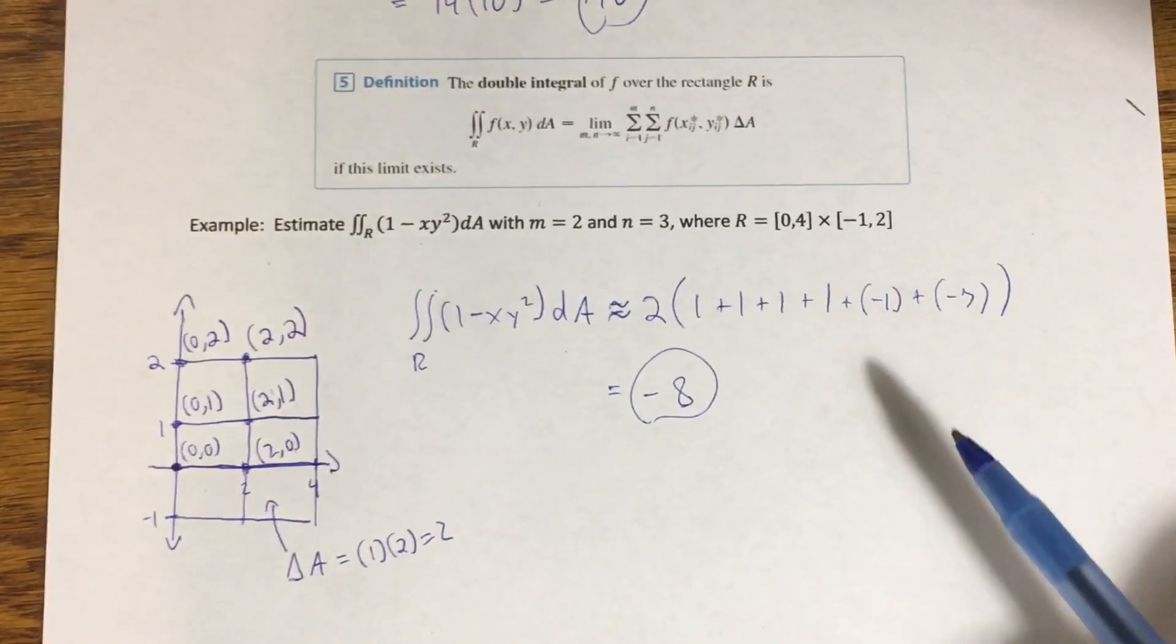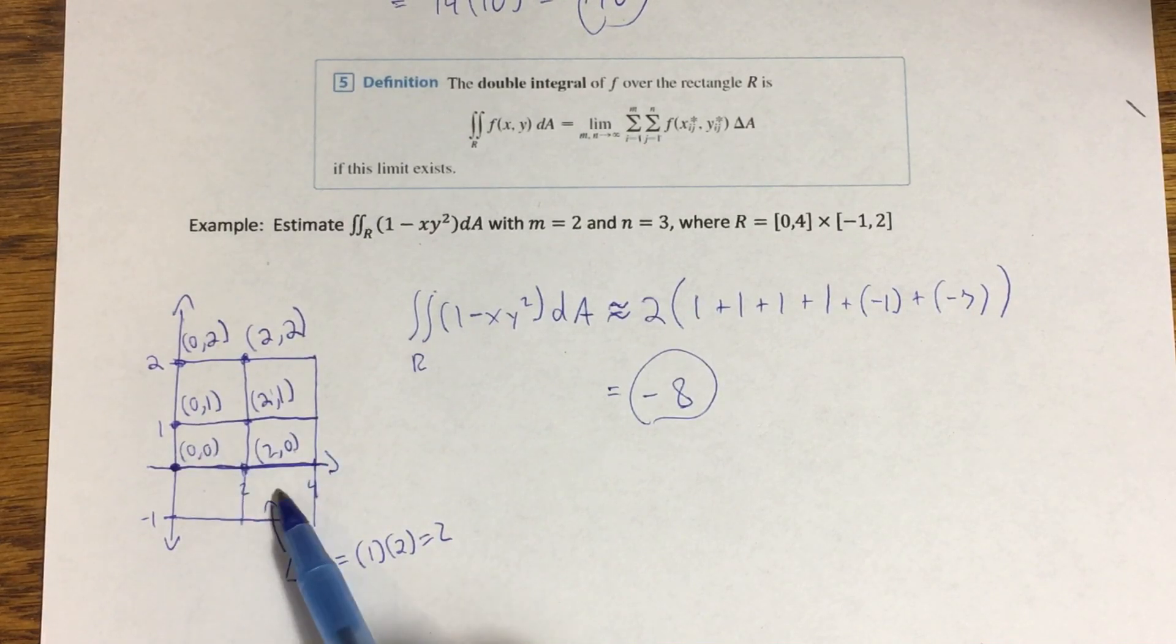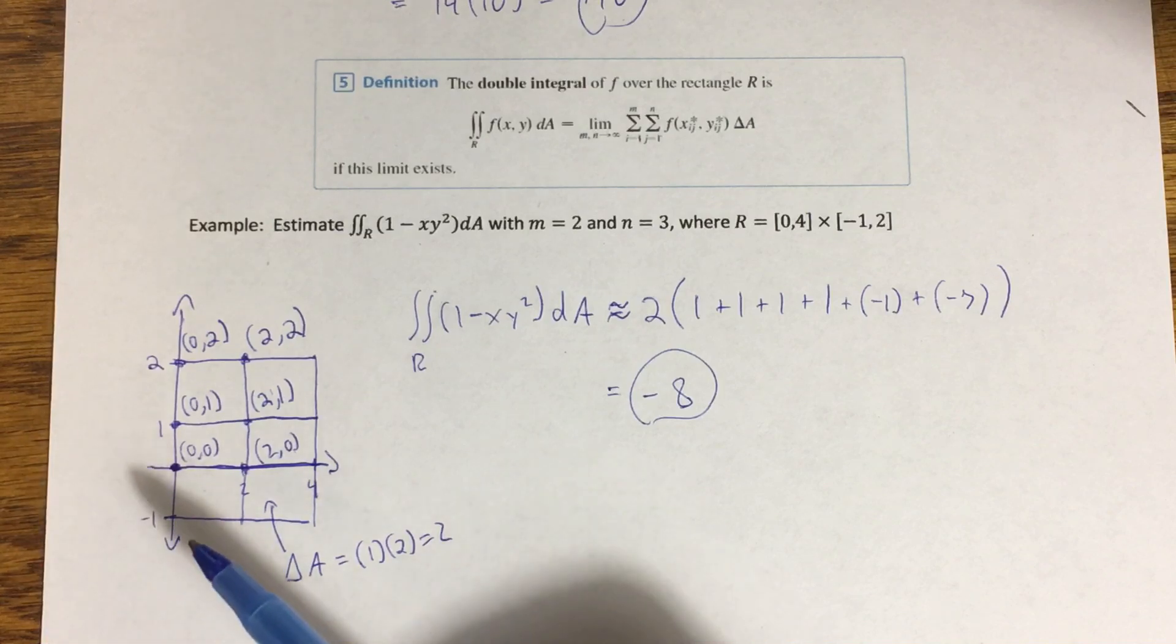Then if I plug (2,1) into this function, I get a negative one. If I plug (2,2) into this function, I get a negative seven. Now to see what's going on here, rather than evaluate this integral, or sorry, rather than estimate using a double sum the way that I worked at the previous example out...